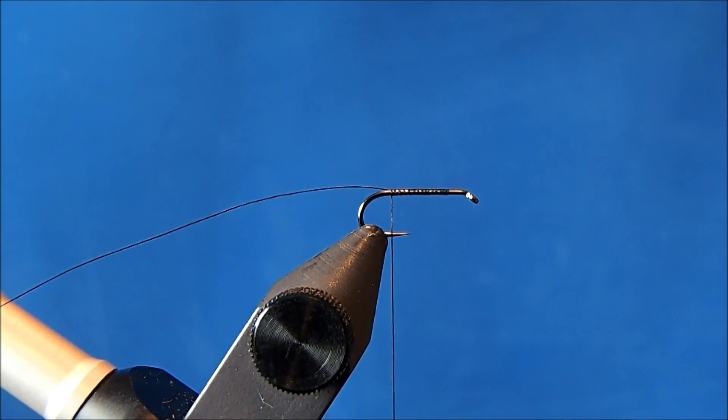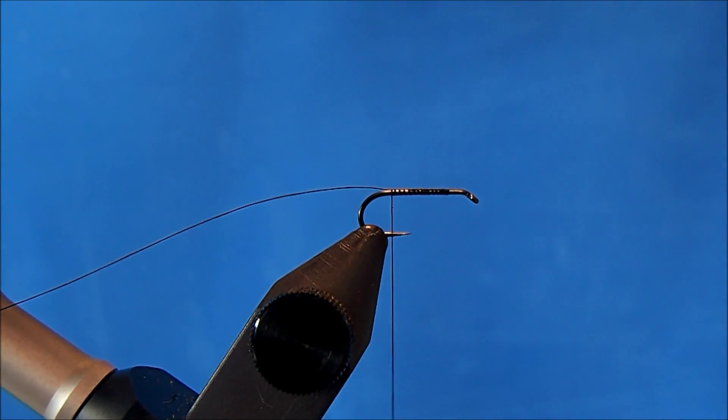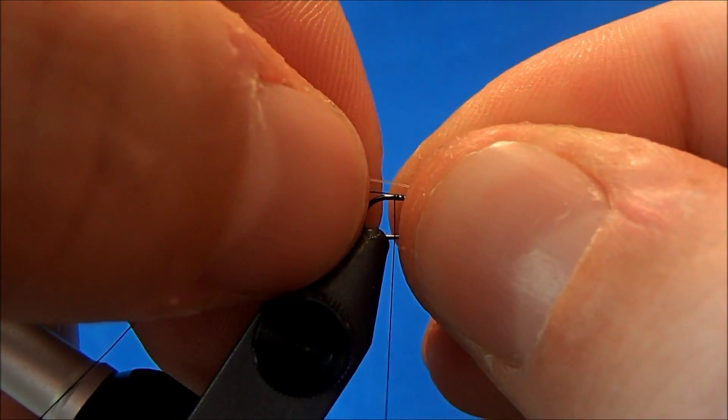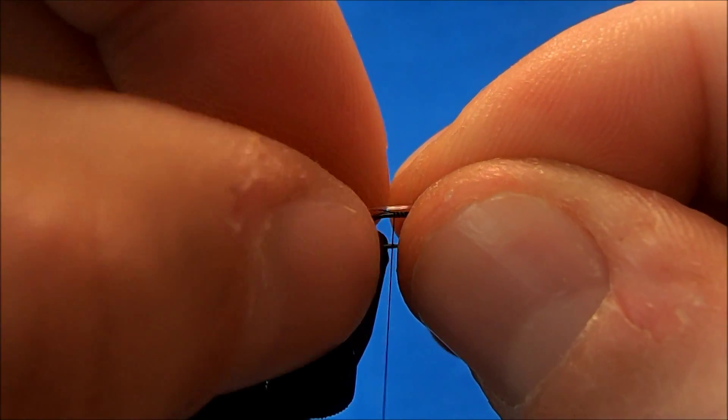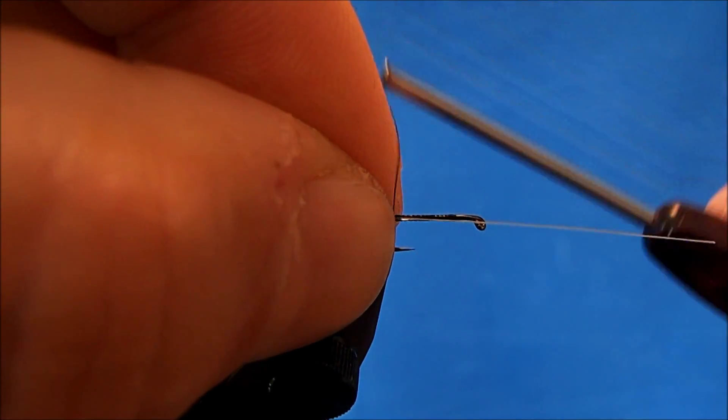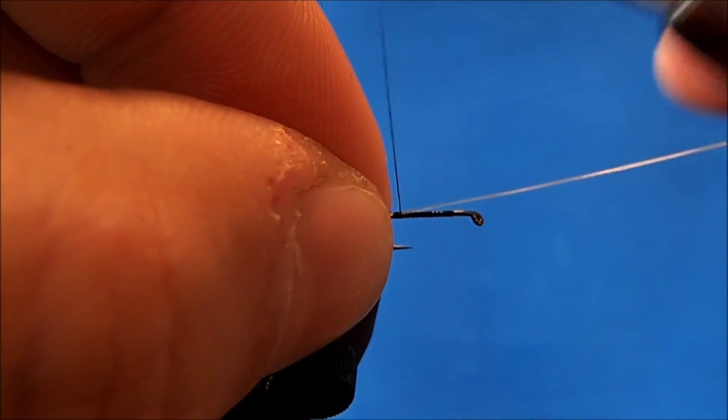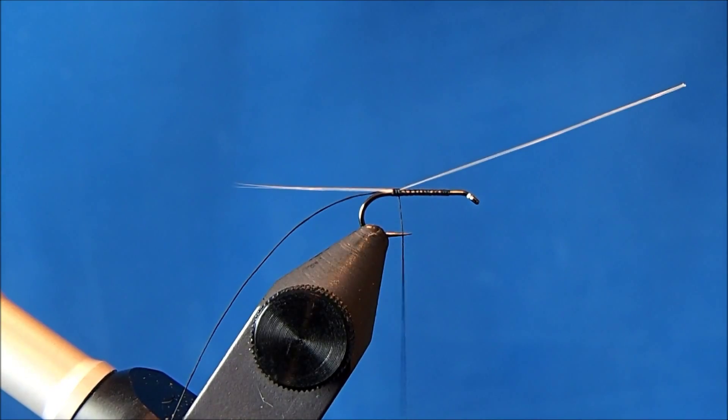The tail that I'm going to use is a micro-fibbit, but you can use dry fly fibers for this if you like, and they're probably a little easier to work with than these fibbits. I'll trim two off and set this on top, and I want it to be at least a hook shank in length. These have pretty long tails, and I'll tie this in directly on top of the hook shank.